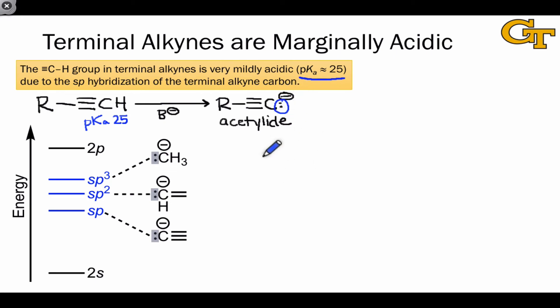In the acetylide, this lone pair is located in an sp-hybridized orbital, and it's a relatively stable pair of electrons because of the greater s character in the sp hybrid orbital relative to sp2 or sp3.